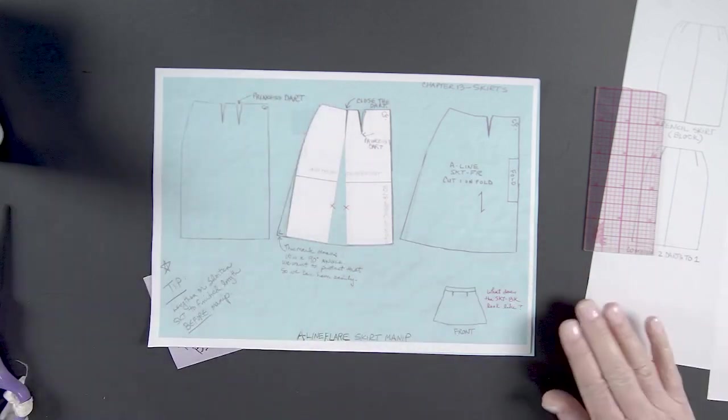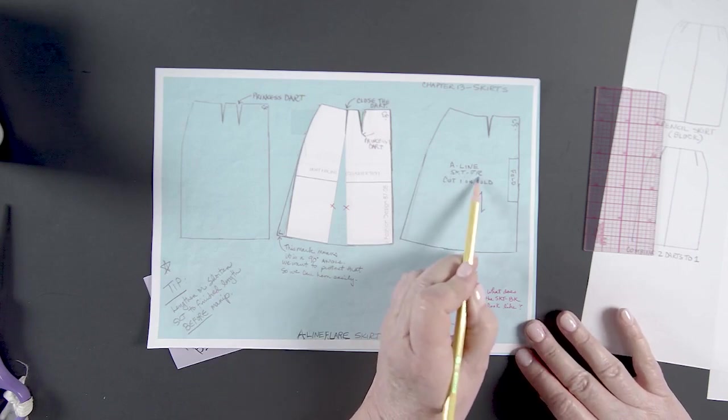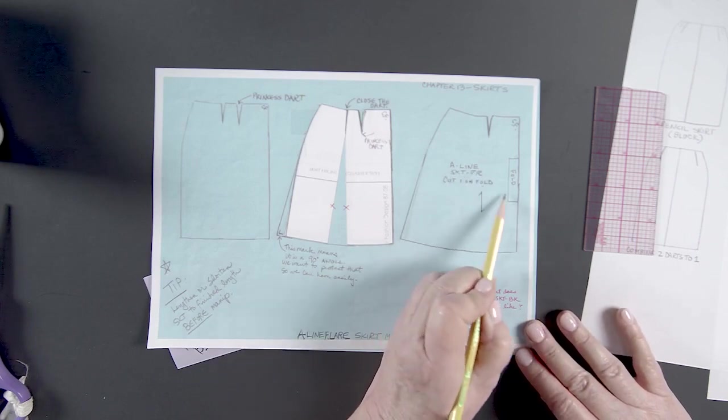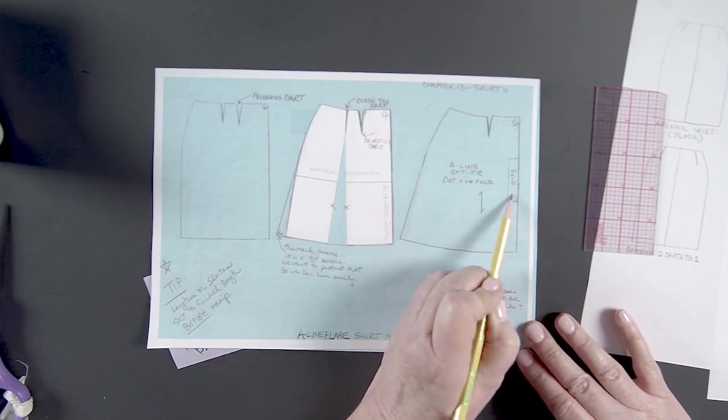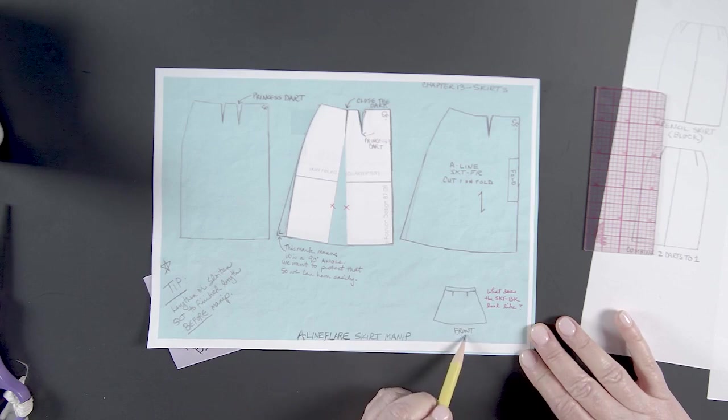And you're just going to write A-line skirt front. Cut one on fold. Here's the rectangle to show it's on the fold. Center front. And then draw a technical drawing here of what this would look like.